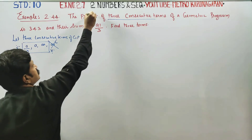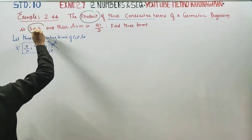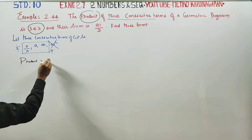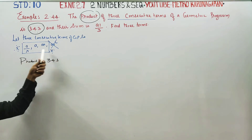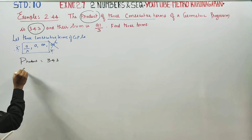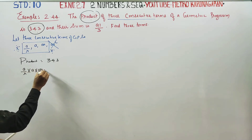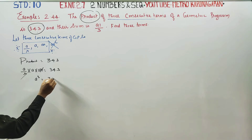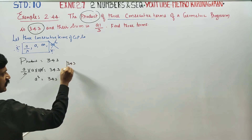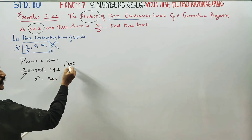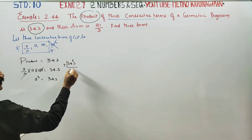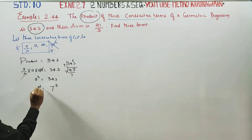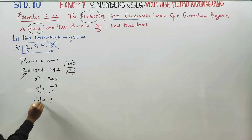A by R multiplied by A multiplied by AR is equal to 343. The R terms cancel, so A cubed is equal to 343. When powers are the same, bases are the same. Therefore, A is equal to 7.